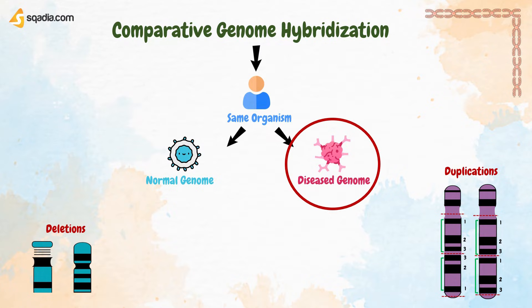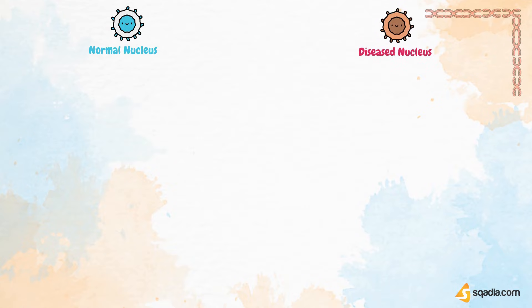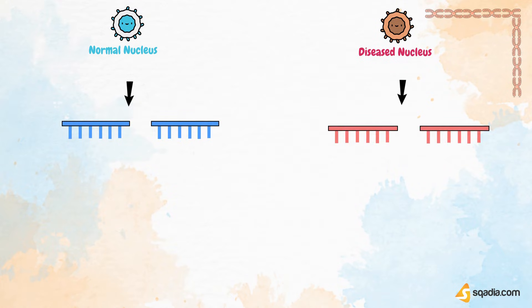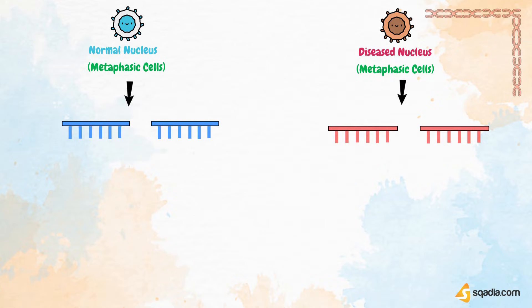Let's understand the steps of Comparative Genome Hybridization. We have a normal nucleus with chromosomes and a diseased nucleus with chromosomes. We will extract out these chromosomes. Both cells are in metaphase. Now, after denaturation, we will get single strands of the genome. We will add fluorescent dye — a blue fluorescent probe in the normal one, and in the diseased, we add a red fluorescent probe.